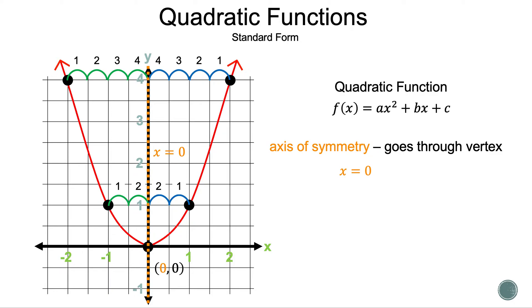Since the function is in standard form, we can also use the formula x is equal to negative b all over 2a to find the axis of symmetry.